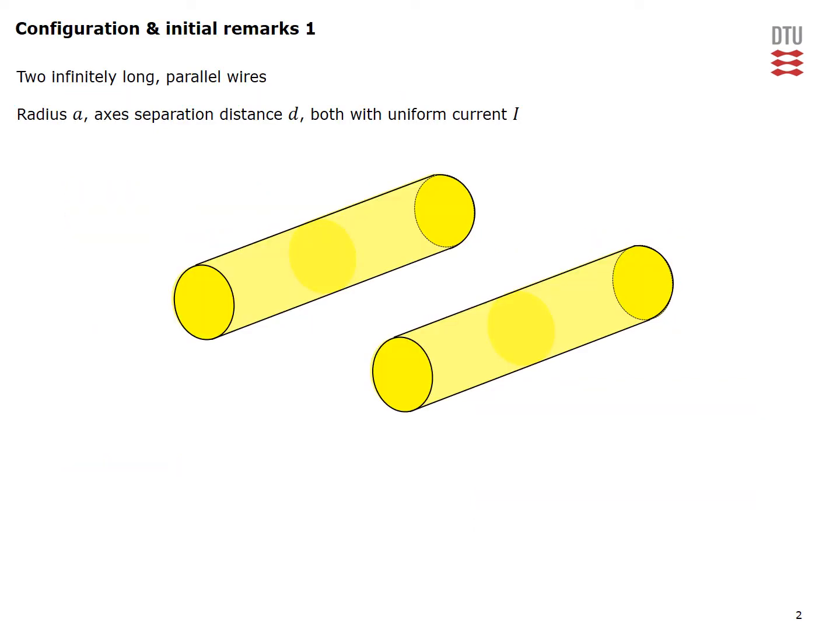This is the configuration of our two-wire transmission line. It consists of two infinitely long and parallel wires that we have sketched on the figure here. The wires are of circular cross-section and have radius denoted by A.